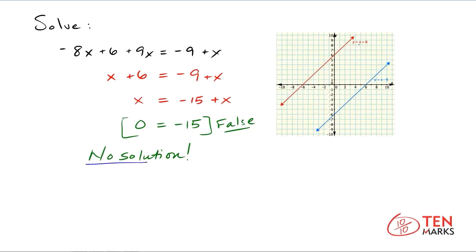If you're wondering how we got these lines — y equals x plus 6 and y equals x minus 9 — they come from this step right here. You can rewrite the left side of the equation and the right side of the equation as two separate equations. So you would get y equals x plus 6 on the left, and then y equals negative 9 plus x.